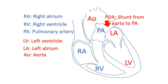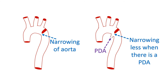Usually, the ductus arteriosus — a connection between the aorta and pulmonary artery which is normally present in all individuals while in the womb — closes off soon after birth. If it does not close, it is called patent ductus arteriosus. When a patent ductus arteriosus joins the aorta just at the region of the coarctation, assessment of coarctation may be erroneous, because part of the patent ductus arteriosus also helps in blood flow. If the patent ductus arteriosus closes after some time, the coarctation appears to have rapidly worsened.